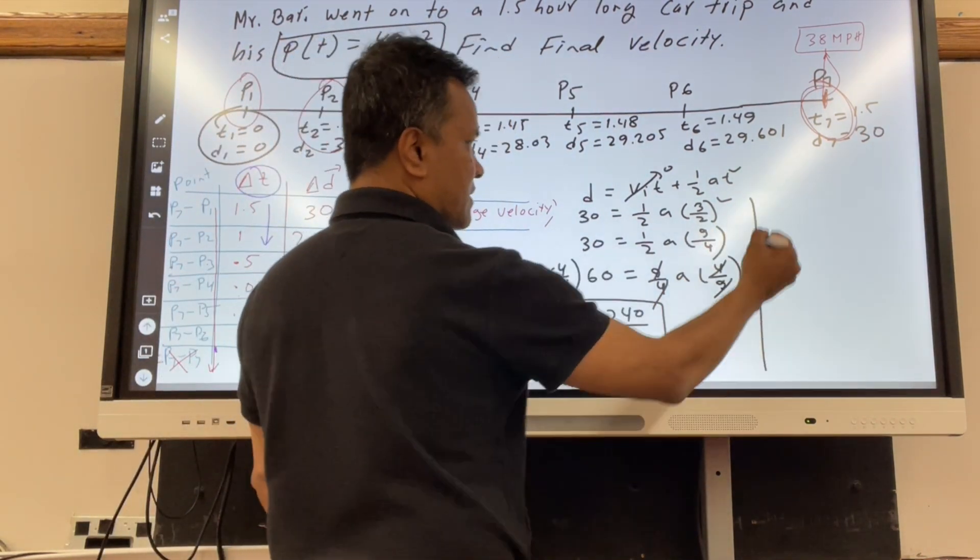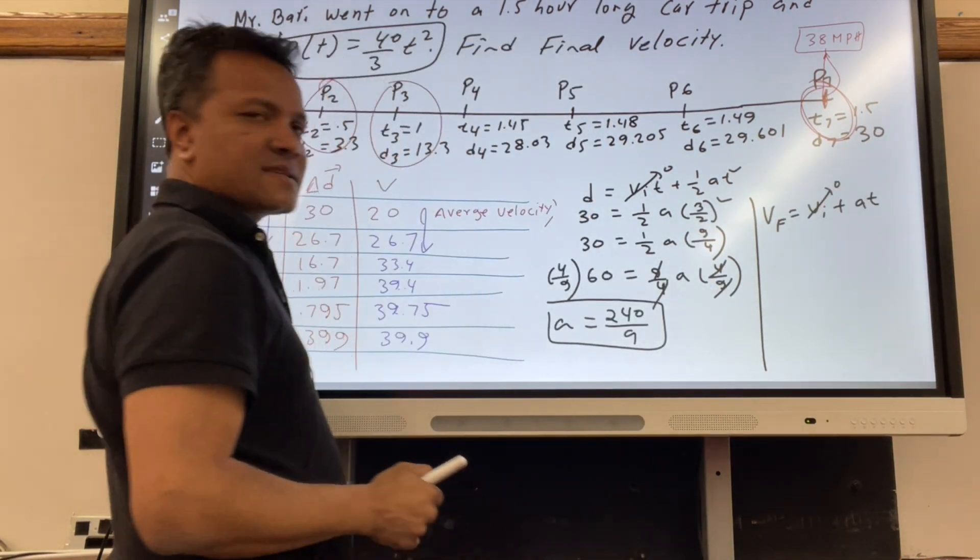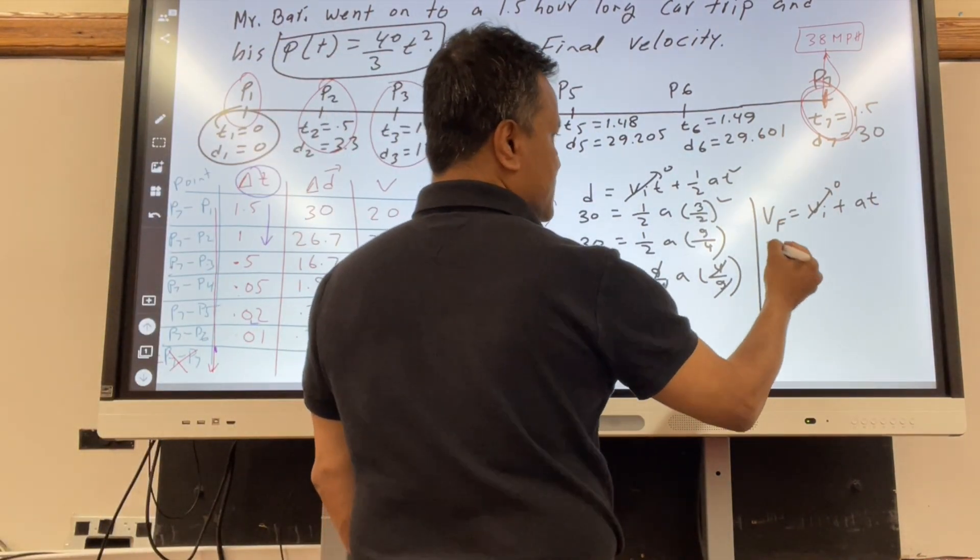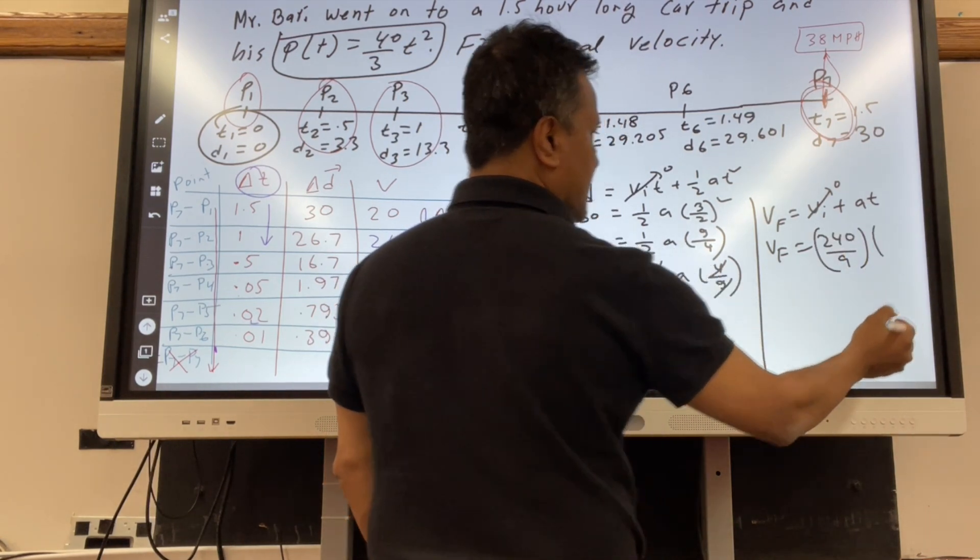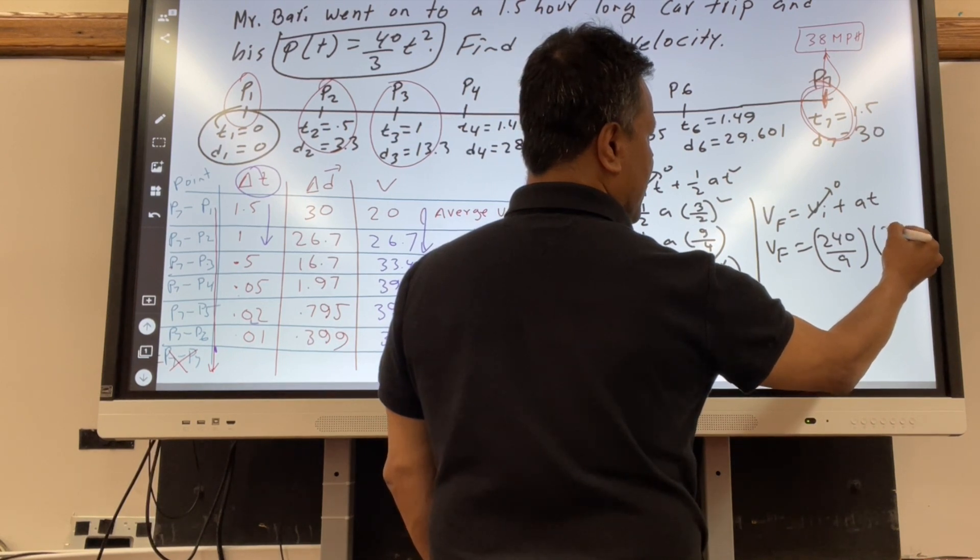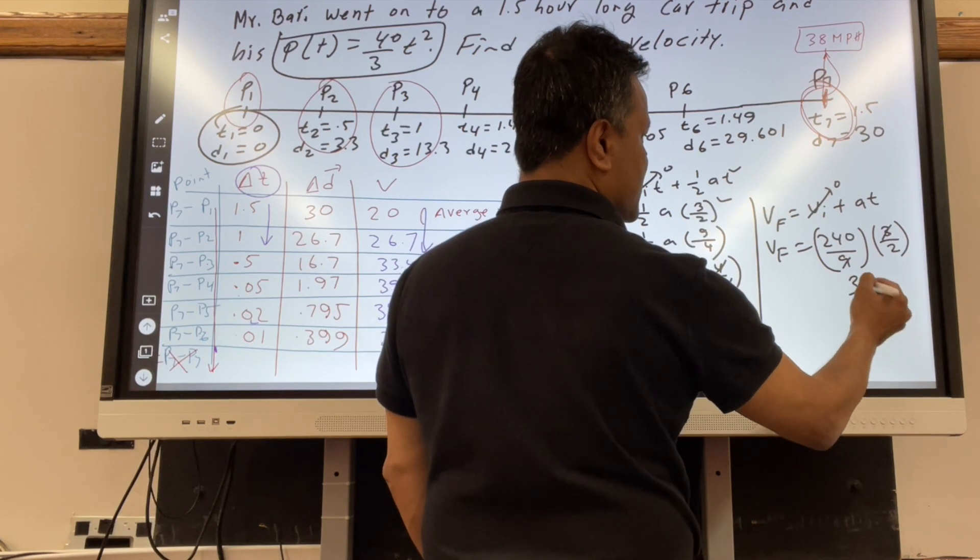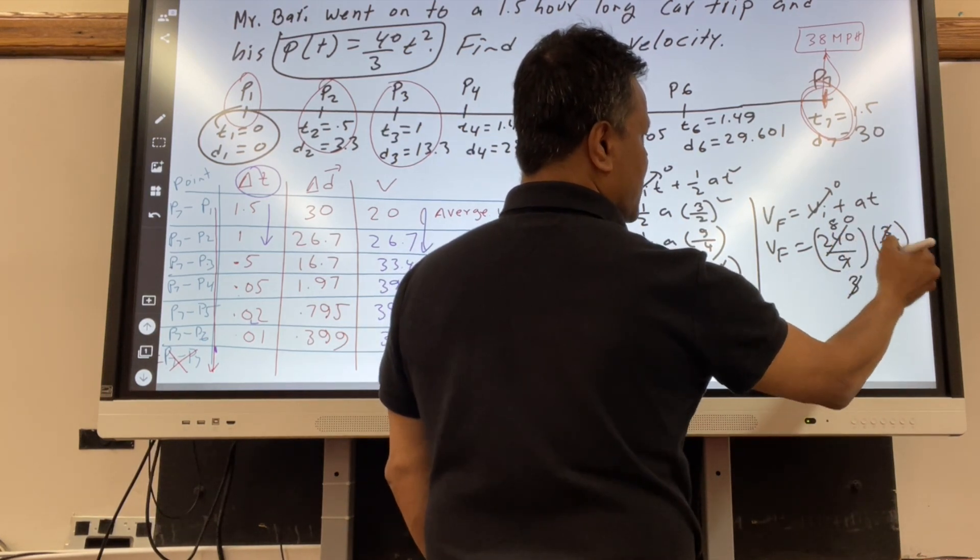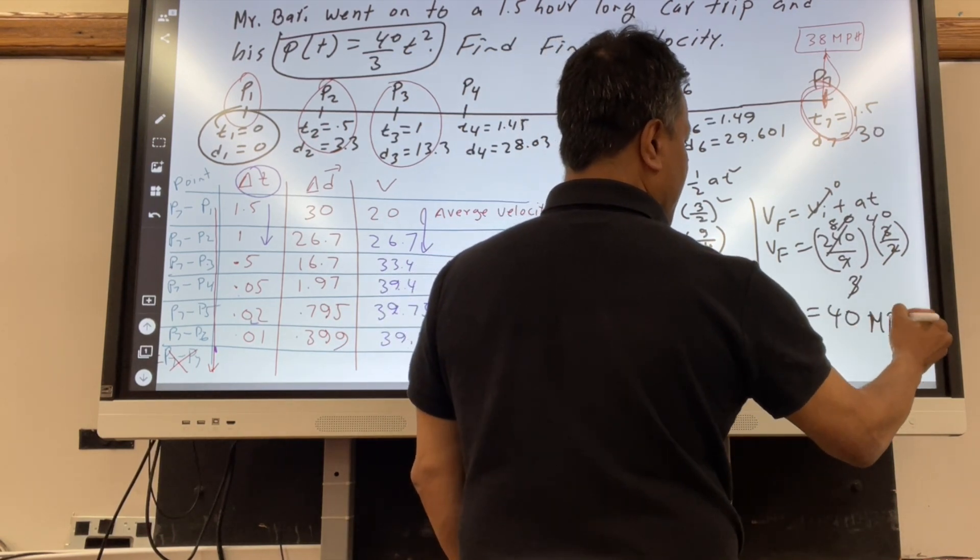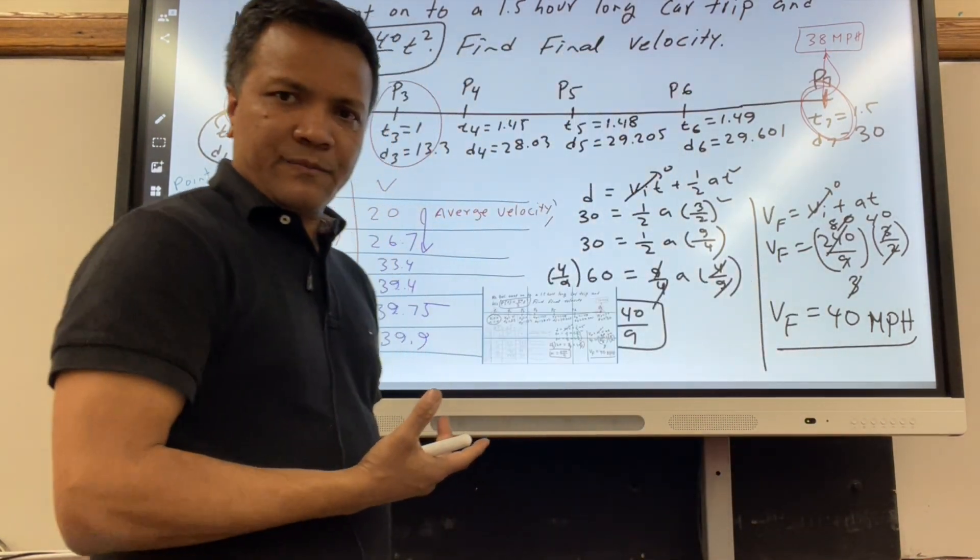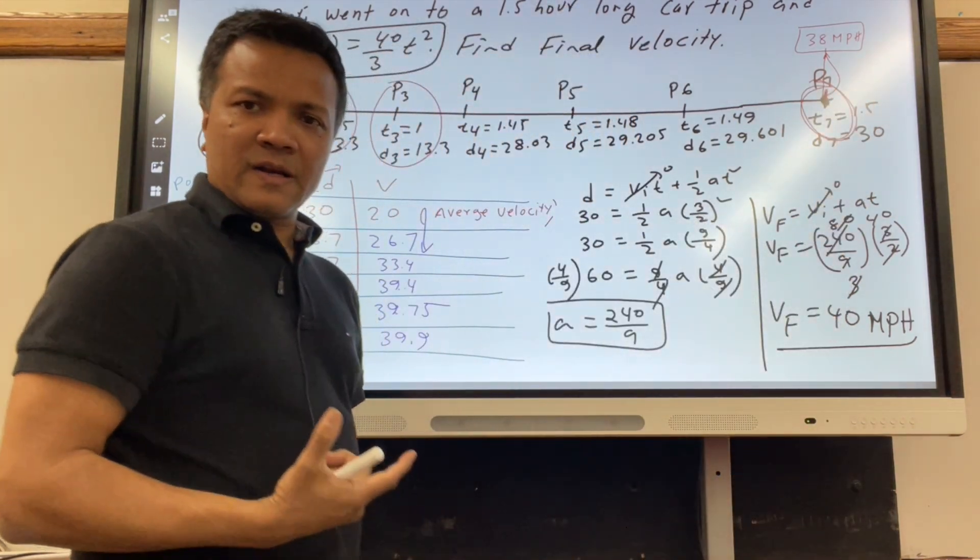Now let's find the final velocity. Final velocity is V_i plus A t, and V_i is 0. Velocity initial is 0. So V_f is 240 divided by 9 times 3 over 2. The 3 goes into 9 three times, goes into 2 to give 40. So V_f is 40 miles per hour. The physics also tells us that the velocity is 40, which we call instantaneous velocity.